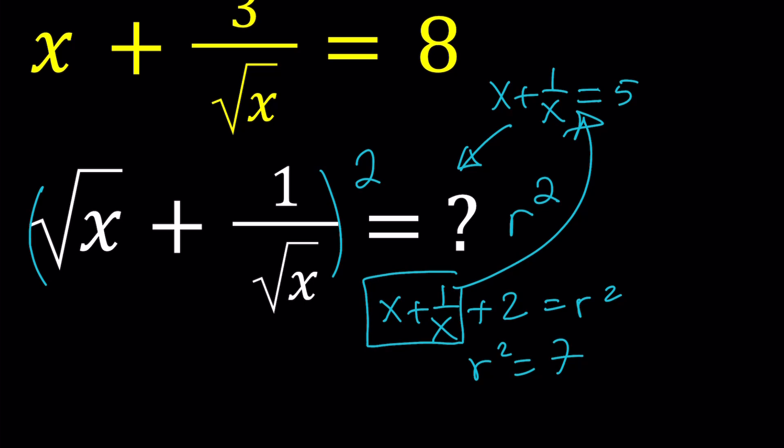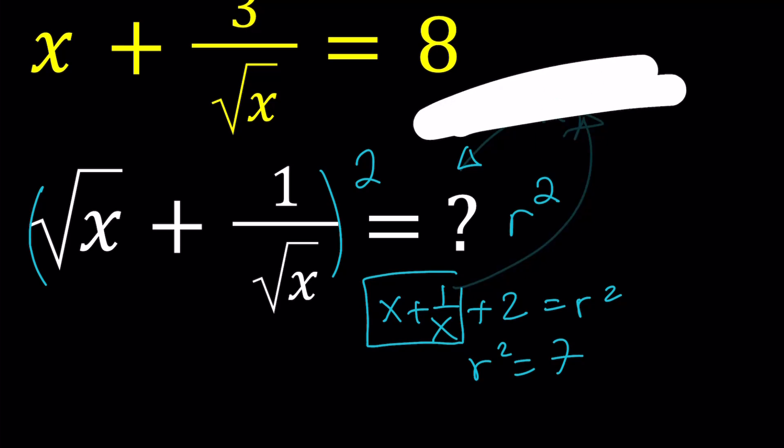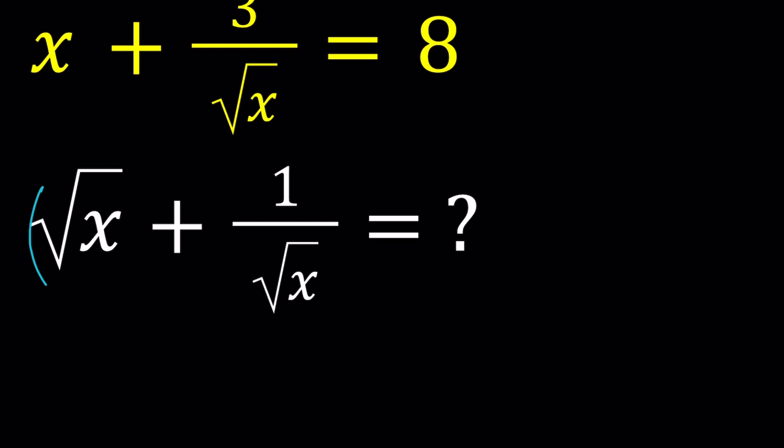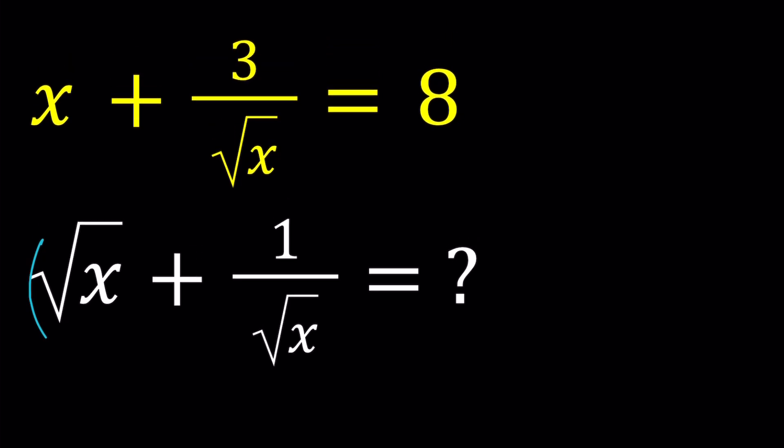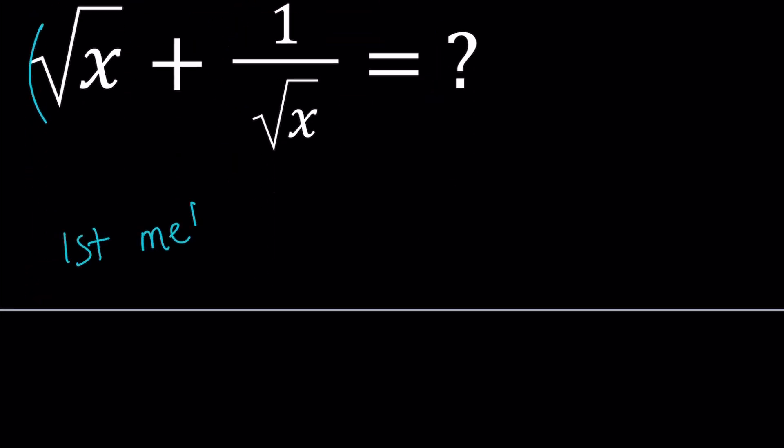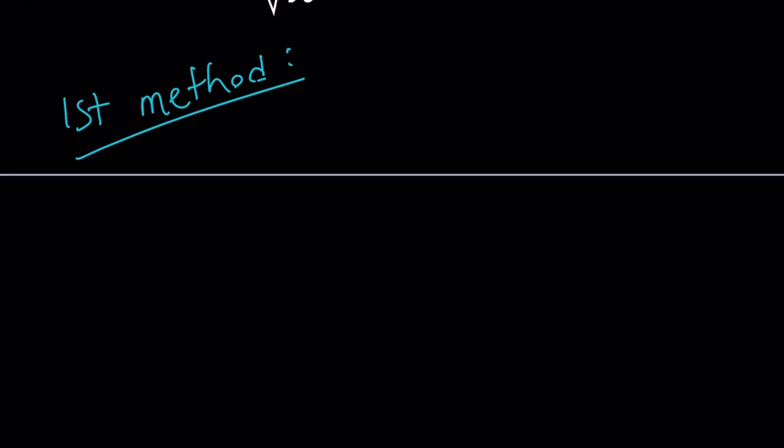And you do know that this is equal to 5 from here, so r squared would be 7 and r would be square root of 7. Easy, right? But this problem is different. I just wanted to show you this because this problem is also very common. Anyways, so this is more special. How do you solve these kinds of problems? Well, I'll be presenting two methods.